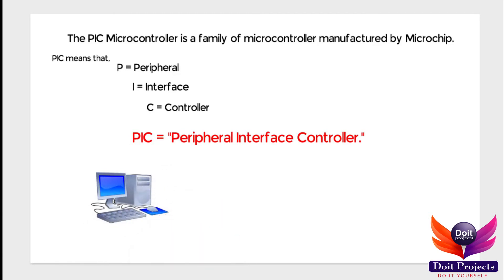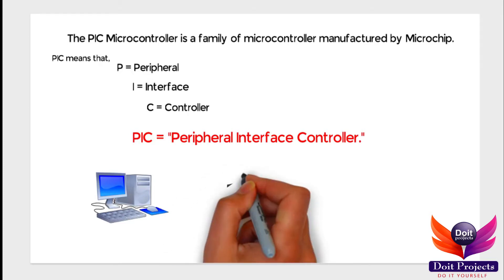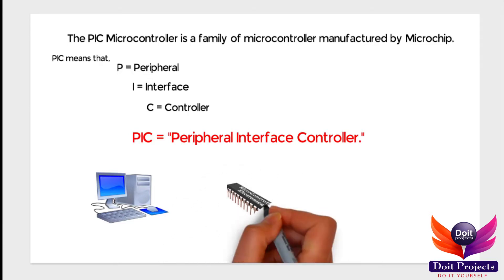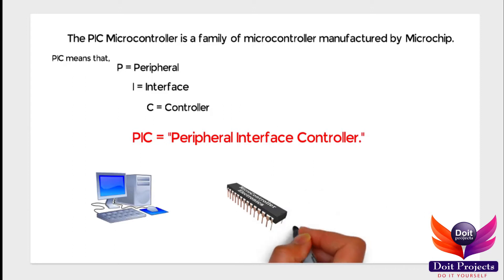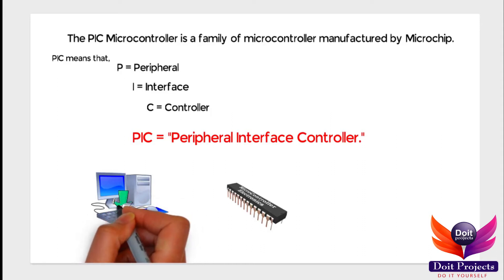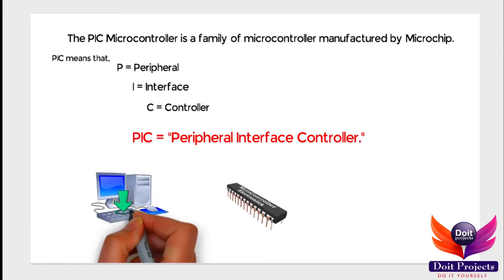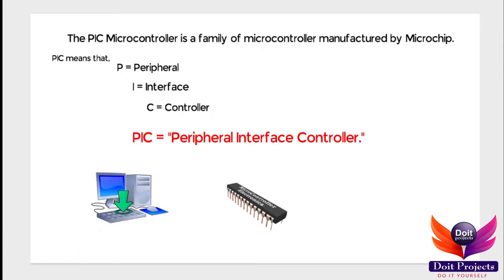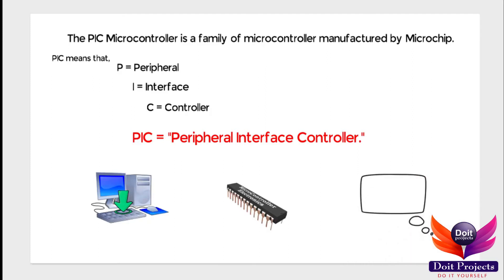Suppose you want to turn on and turn off the lights and fans using the computer keyboard buttons A and P. But how is this possible? Because the keyboard is an analog device and the computer is a digital device.